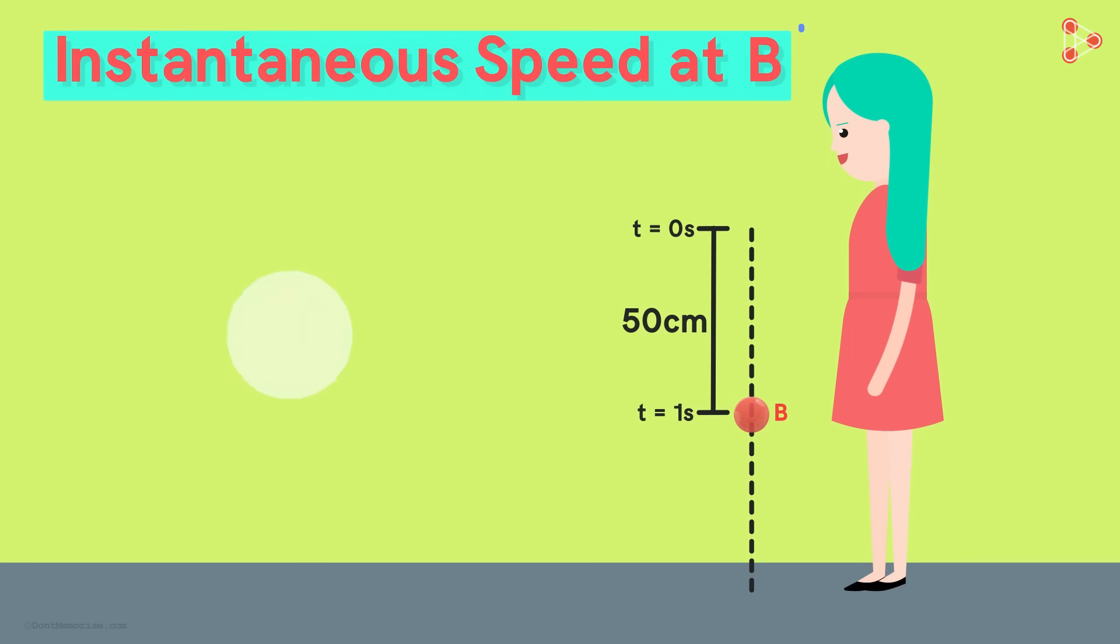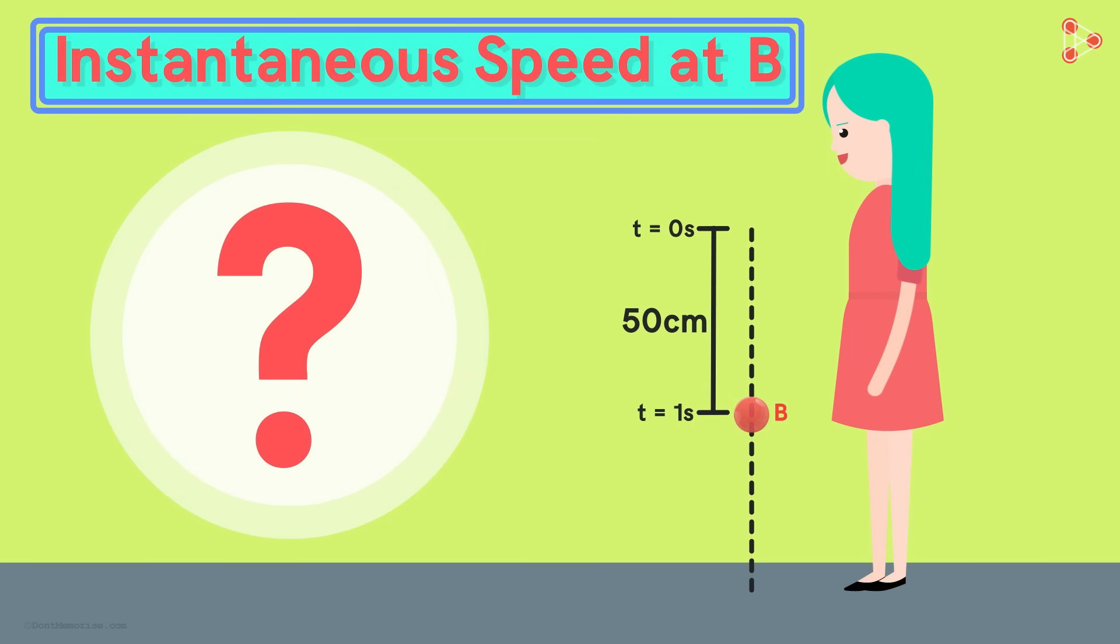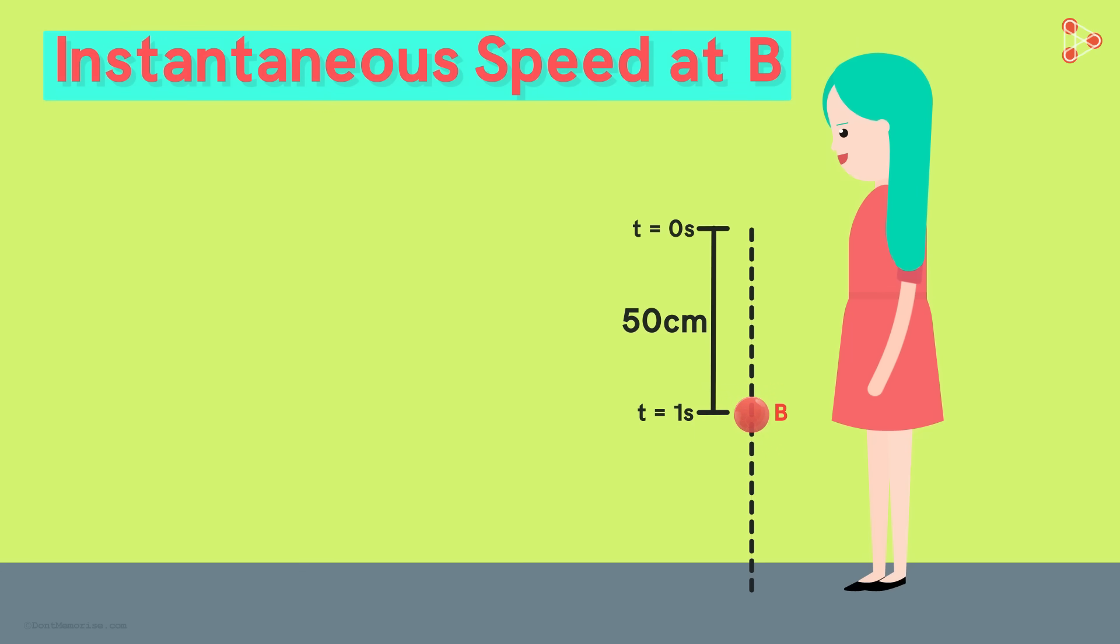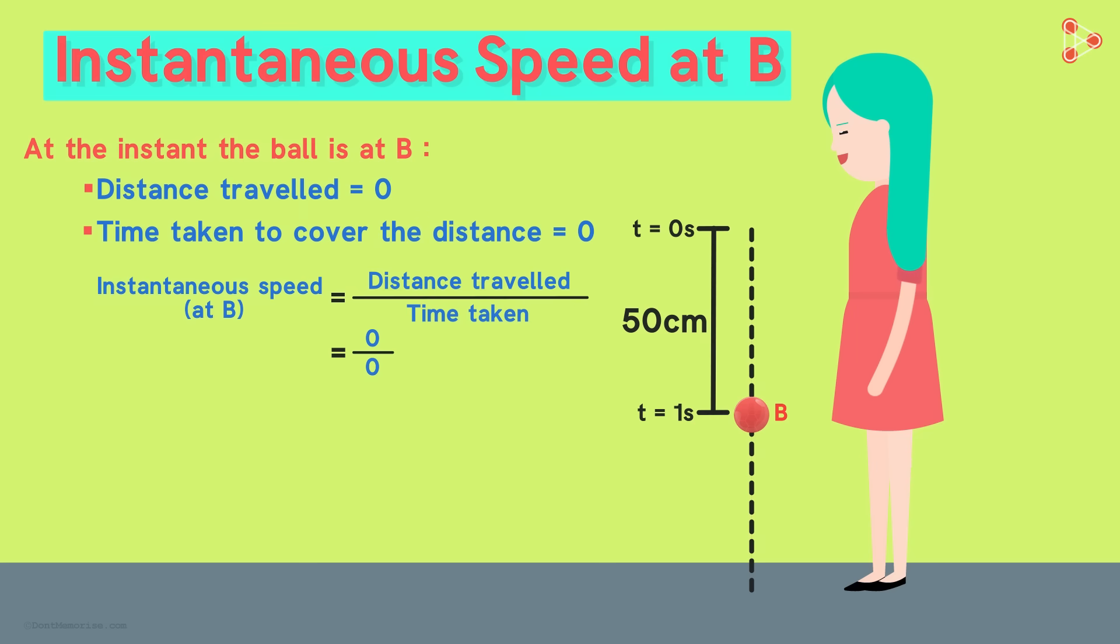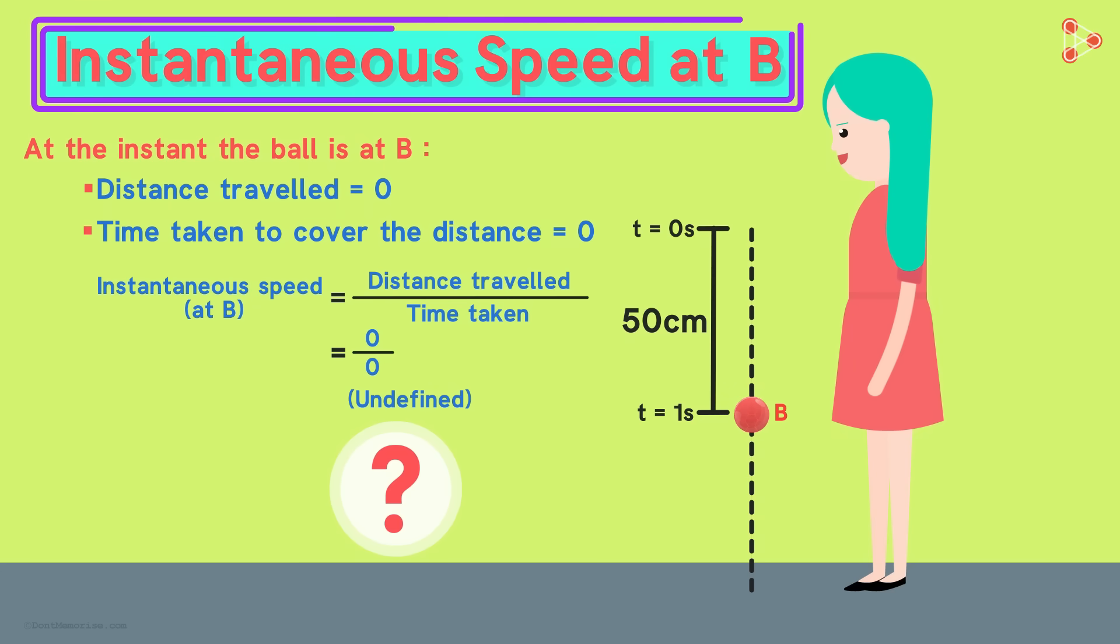Can you try finding the instantaneous speed? Let's see what happens at the instant the ball is at position B. The distance travelled by the ball at this instant is 0 and the time elapsed at this instant is 0. So we get the speed to be 0 divided by 0 which is undefined. Doesn't make any sense right? So how do we then find the instantaneous speed of the ball?